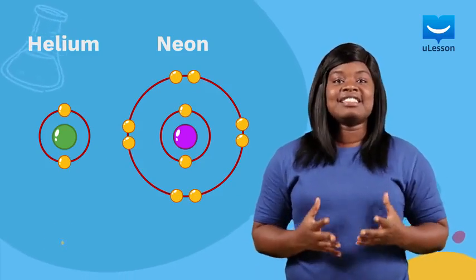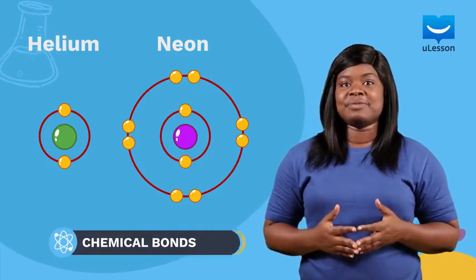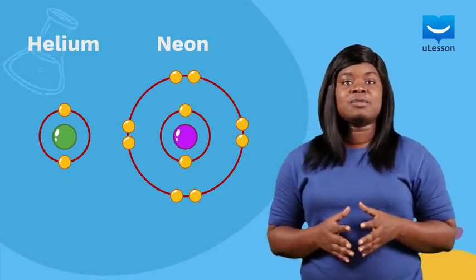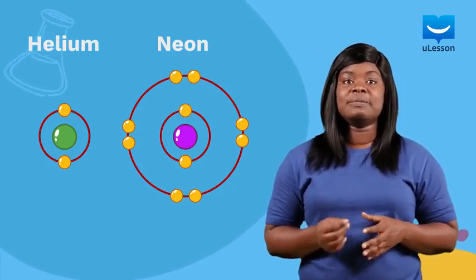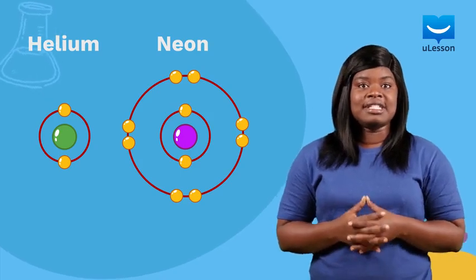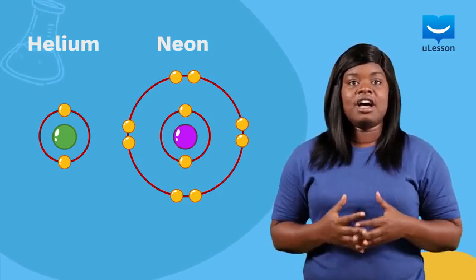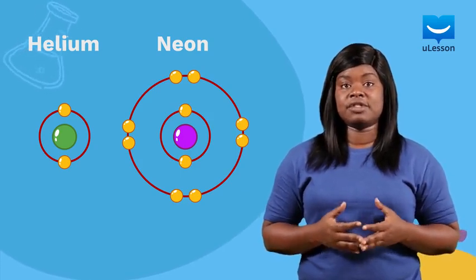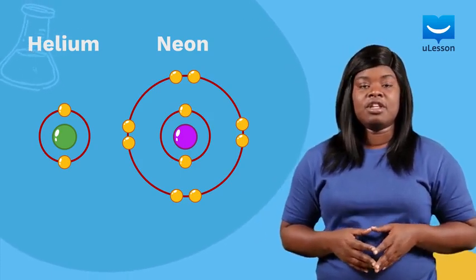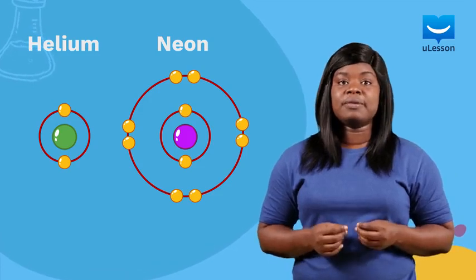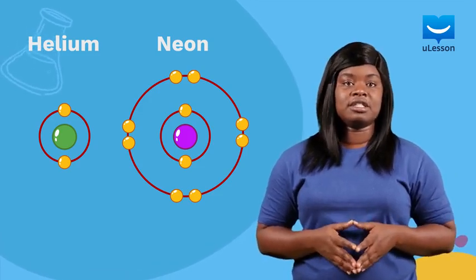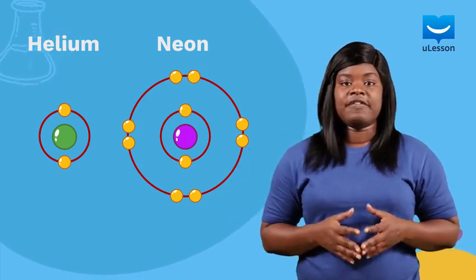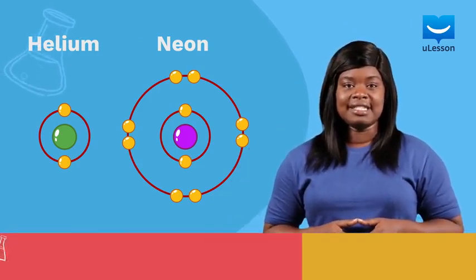Hi! In our lesson on the arrangement of electrons in an atom, we explained that the atoms of some elements like helium and neon seem to be stable because their outermost electron shells contain two and eight electrons respectively. In other words, they have stable electron configurations. Elements with these kinds of atoms are referred to as noble gases.